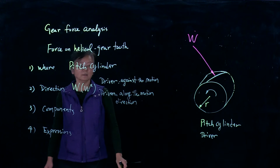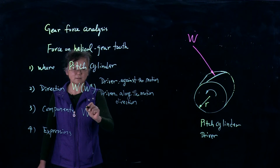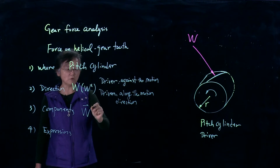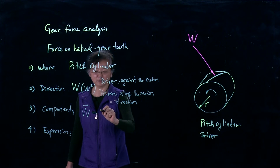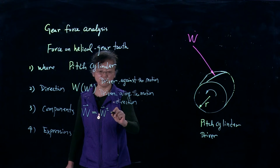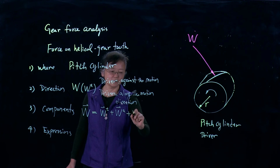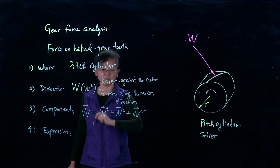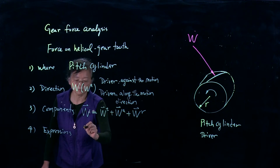Now for components — this is a three-dimensional problem, so the normal force can be split into three components: the tangential force (Wt), the axial force (Wa), and the radial force (Wr). R for radial, A for axial, T for tangential. We already know Wt because we know the power.